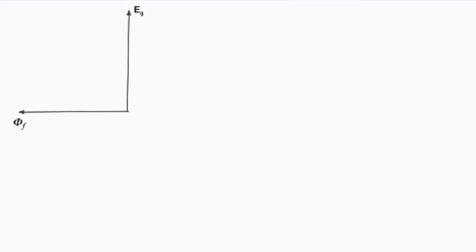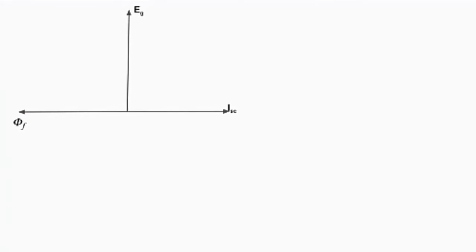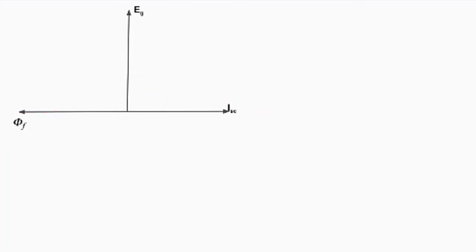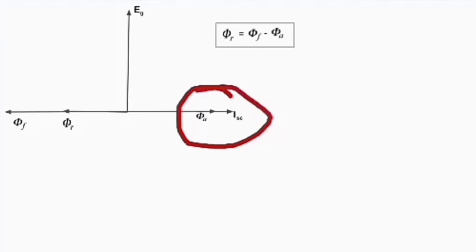Looking at the phasor diagram: the first phasor is the main field flux, and the EMF lags the main field flux by 90 degrees. The short circuit current lags the EMF by 90 degrees. Armature flux is a phasor aligned with the short circuit current phasor, because short circuit current is essentially the armature current.